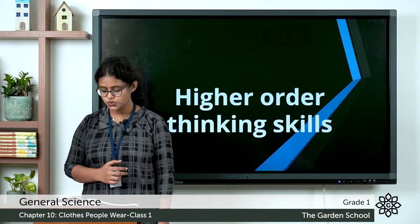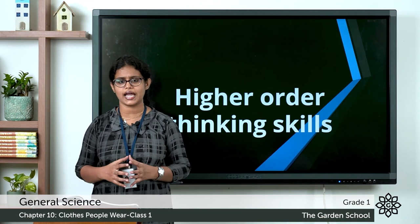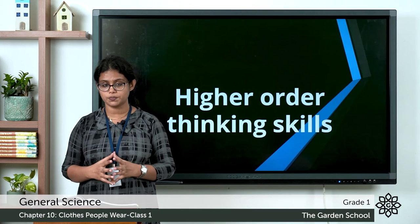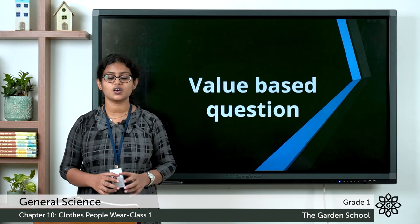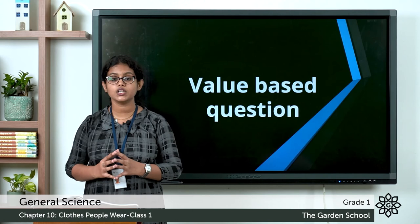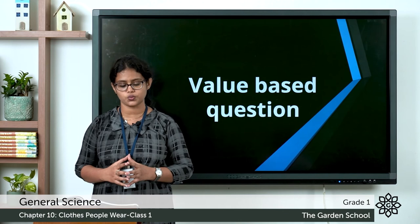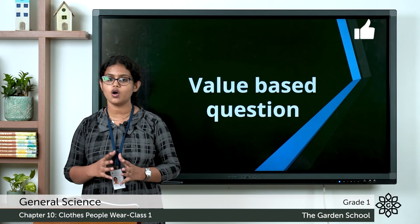You can see different pictures here — look at the clothes these people are wearing and think about what kind of work they do. Observe the pictures and write the type of work below each picture as an activity. Coming to the value-based questions: Do you wear clean clothes? And do you give your woolen clothes that you have outgrown to those who need them? Tick yes or no for each.